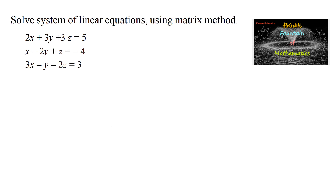Solve a system of linear equations using the matrix method. The equations are: 2x + 3y + 3z = 5, x - 2y + z = -4, and 3x - y - 2z = 3.